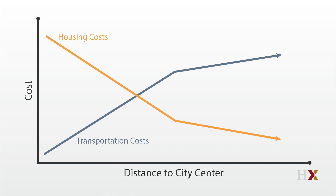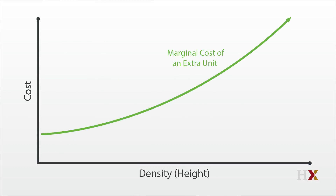We're now going to assume that builders can deliver more density. Density just means more housing units on a single acre of space. We're going to draw a cost curve reflecting the cost of adding more units, and that's going up. Building four stories costs more than building three stories, and so forth. We're assuming that people don't care what floor they live on and all the units are identical. Technically, this curve reflects the marginal cost of each unit, meaning how much the builder's total costs go up as they add one more unit.